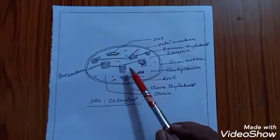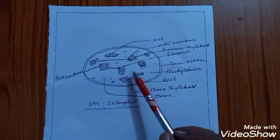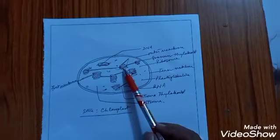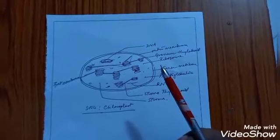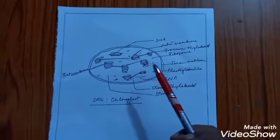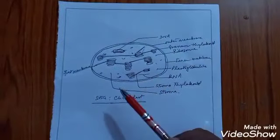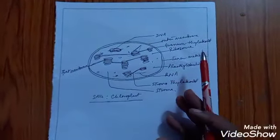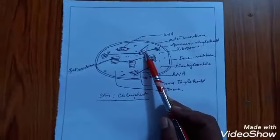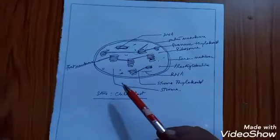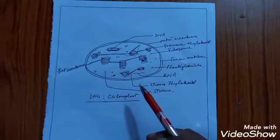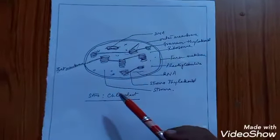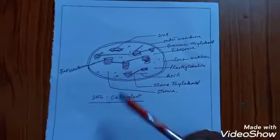The light dependent phase occurs in the granum, and the light independent phase — that is the fixation of CO2 — occurs in the stroma. The photosynthetic pigments absorb light quanta and migrate the radiant energy to reaction centers located in the granum in the form of photosystems. There are two types of photosystems: Photosystem I, known as P700, and Photosystem II, known as P680. Both are interconnected with different types of carriers and are present in the granum.